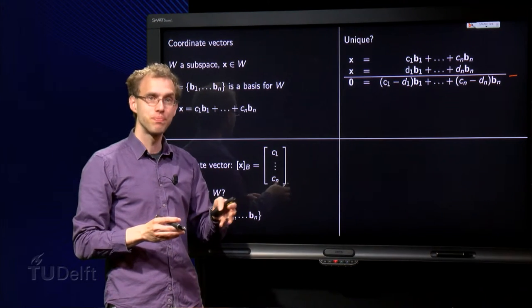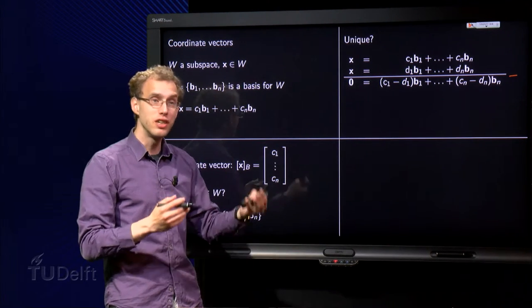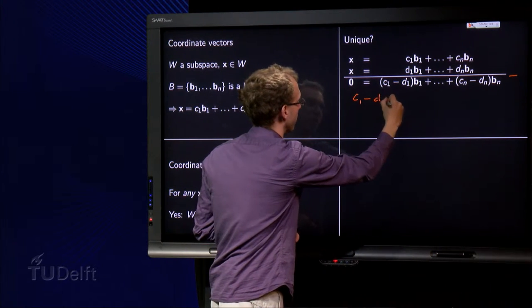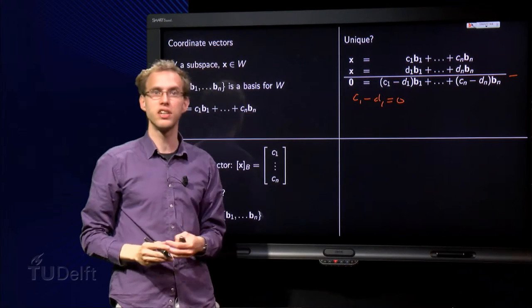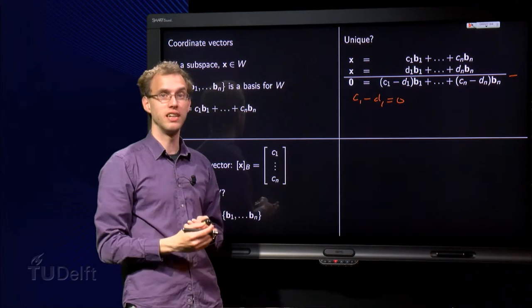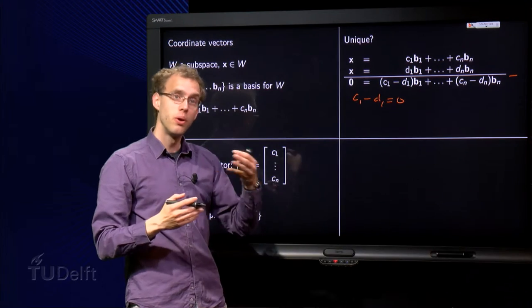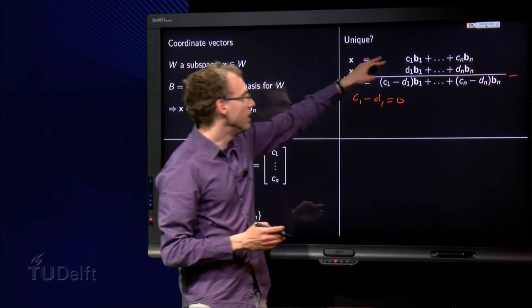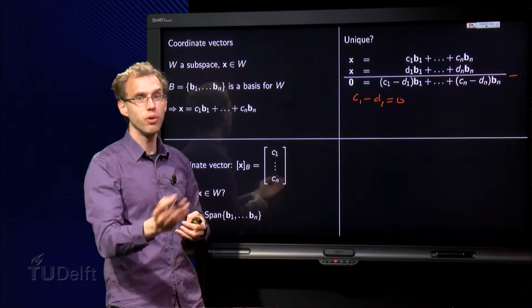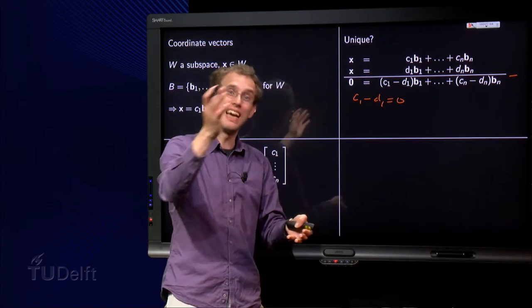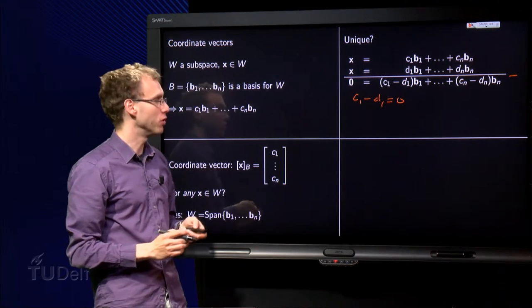So this equation has only the trivial solution. So we need c₁ minus d₁ equals 0, and so on. So c₁ equals d₁, c₂ equals d₂, up to cₙ equals dₙ. All weights are the same. So indeed we can do this in only one way. If we try to do it in another way, we find that the second way is exactly the same as the first way.